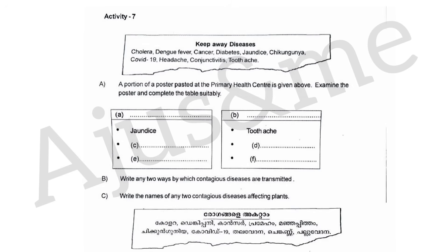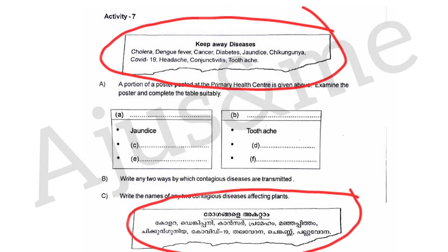COVID-19 symptoms include headache, conjunctivitis, and tooth pain. Diseases listed include dengue, cancer, diabetes (Pramayha), jaundice (Manjapitham), chickenpox, COVID-19, headache (Thalavetana), red eyes (Chengan), and tooth pain (Pallu Vedana).